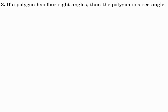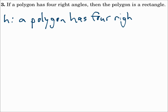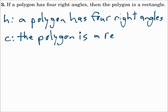Number 3: If a polygon has four right angles, then the polygon is a rectangle. The hypothesis is: a polygon has four right angles. The conclusion is: the polygon is a rectangle. Again, 'if' is not part of the hypothesis and 'then' is not part of the conclusion.